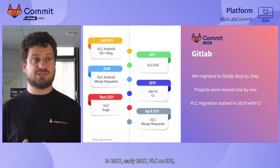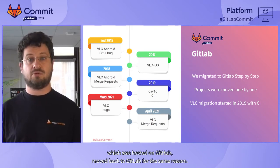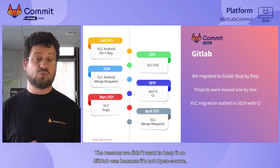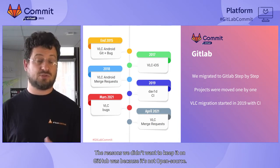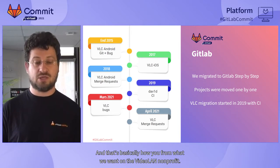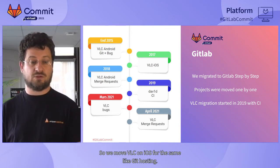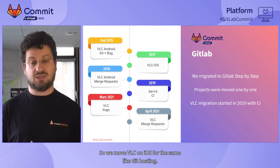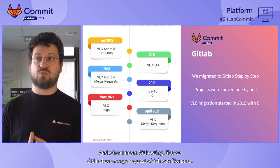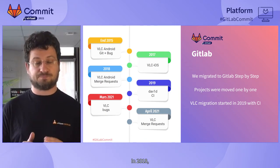In early 2017, VLC on iOS, which was hosted on GitHub, moved back to GitLab. The reason we didn't want to keep it on GitHub was because GitHub is not open source — and that's contrary to what we want for the Video LAN nonprofit. So we moved VLC on iOS for the same purpose: Git hosting and bug tracking.